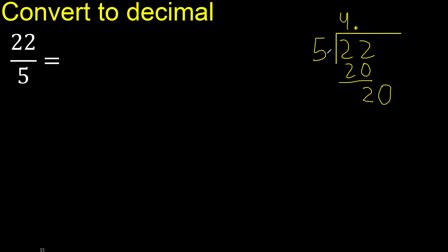20. 5 multiplied by 4 is 20 — 20 is not greater. 20 minus 20 is 0 — therefore finish.